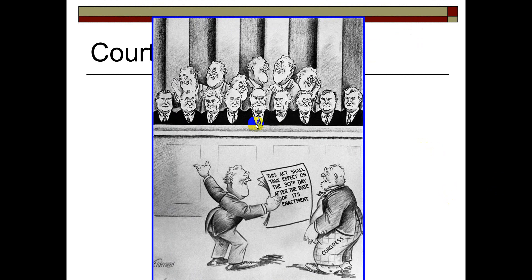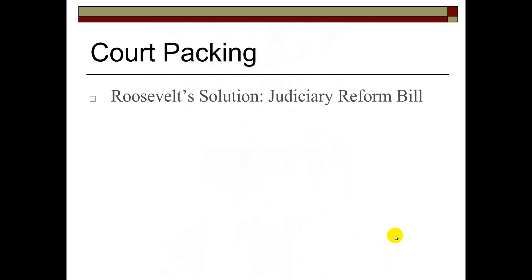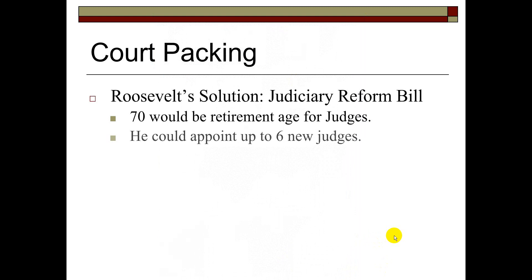As you can see here, this cartoon is making fun of the law. You have the Supreme Court, and then you have six FDRs in the background. Congress looks somewhat shocked as Roosevelt hands them the bill, with the Roosevelt judges standing in the back. This is Roosevelt's solution to his problem: the Judiciary Reform Bill. Age 70 would be the retirement age for judges, and he could appoint up to six new judges based on that retirement provision.